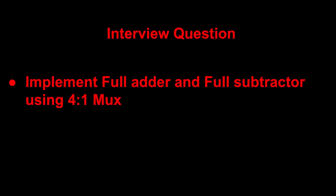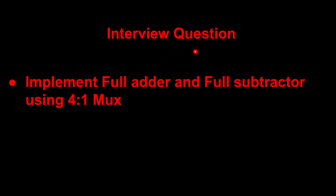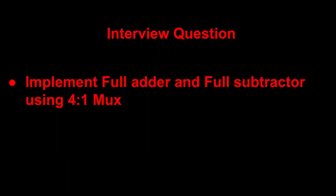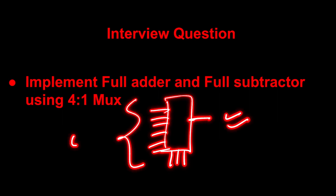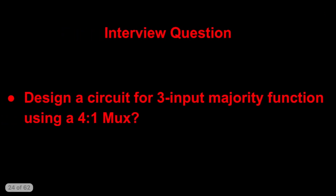Regarding the MUX reduction technique, suppose we have to implement a full adder or full subtractor using a 4×1 MUX. You know that a full adder has three inputs, and with three inputs there are eight possible combinations. So for each output — one for sum and one for carry, or one for difference and one for borrow — you need to handle all eight input combinations using the select lines.